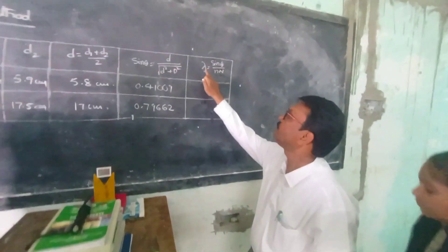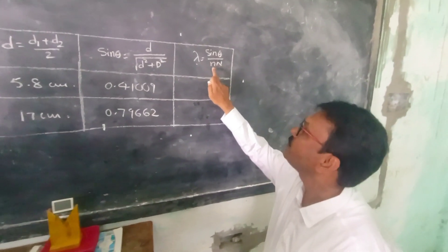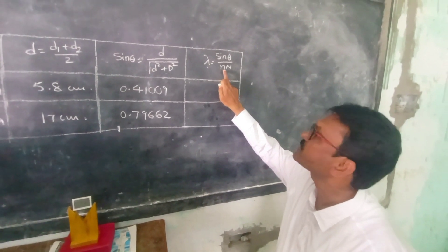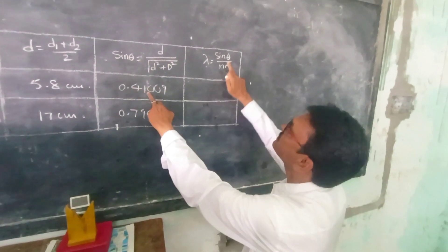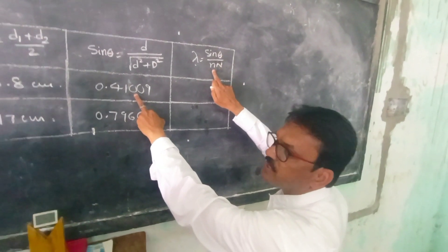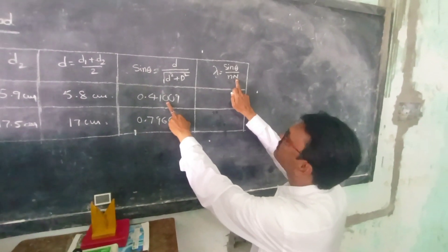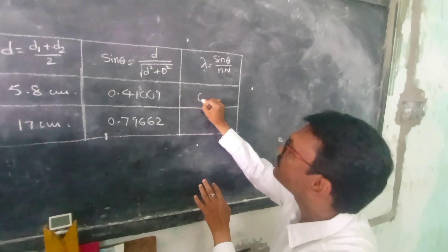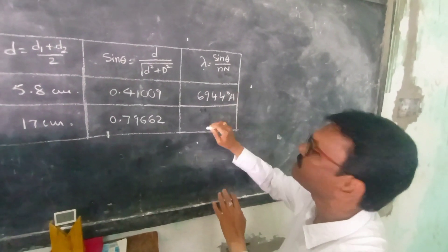Now applying the formula lambda equals sin theta divided by m times N. For the first order, small m equals 1. Substituting sin theta equal to 0.41009, m equal to 1, and capital N equal to 15,000 divided by 2.54, we get lambda equal to 6944 angstrom units.